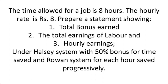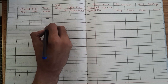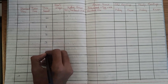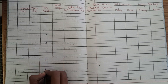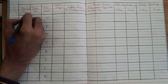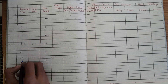Progressively — in the question they have given 'progressively', which means the time saved should increase each hour in each case. So the first case it will be 0, second case the time saved will be 1, then 2, 3, 4, 5, 6 and 7. The standard time given in the question is 8 hours.